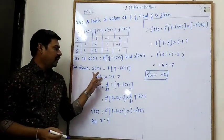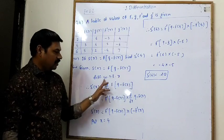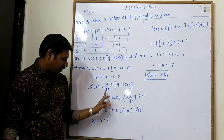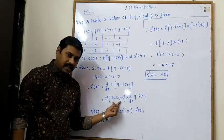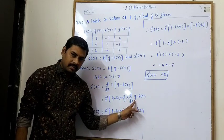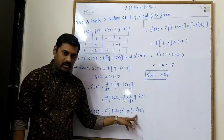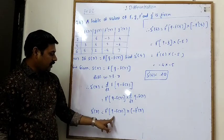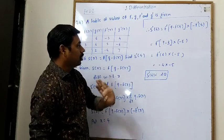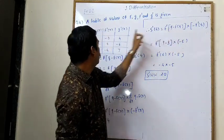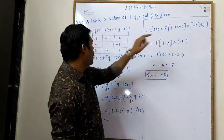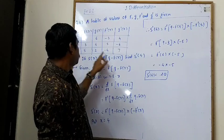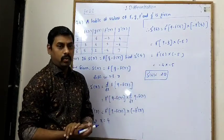Example 3 summary: s(x) = f(9 − f(x)), differentiated with respect to x gives s'(x) = f'(9 − f(x)) · (−f'(x)). At x = 4: f(4) = 3, f'(4) = 5, so f'(9 − 3) = f'(6) = −4. Then −4 · (−5) = +20. Question numbers 4 sub-questions 1, 2, 3 are for homework.